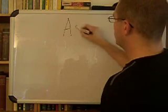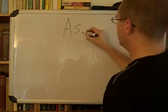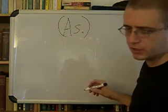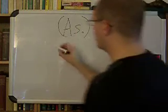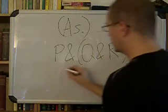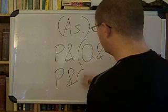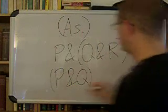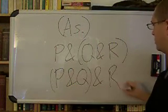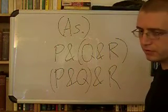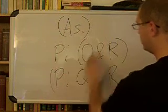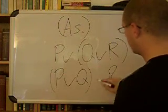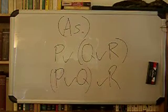Then we have association. P and (Q and R) can turn into (P and Q) and R. And the same thing applies with 'or': it can turn into P or (Q or R). It's all logically equivalent.